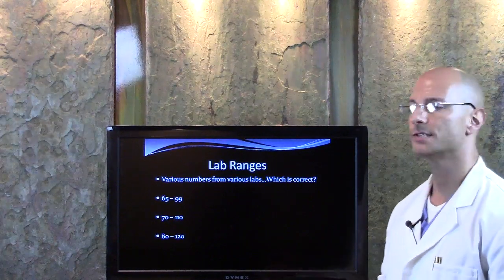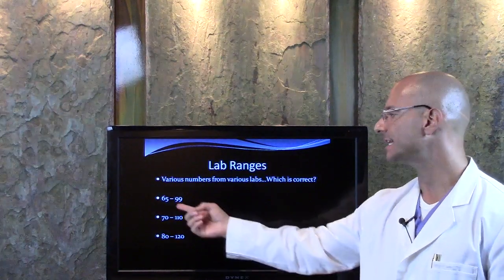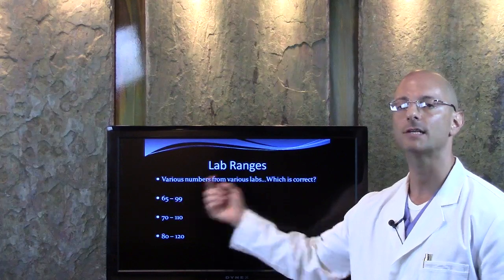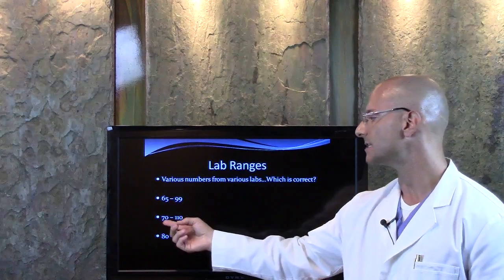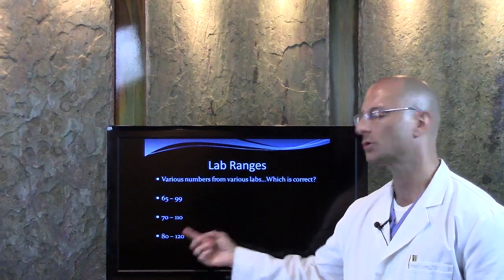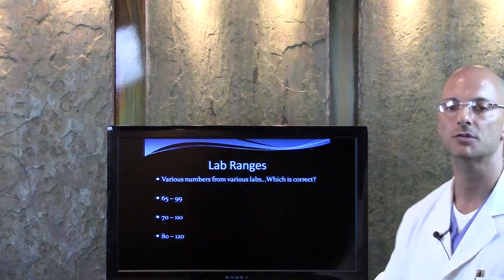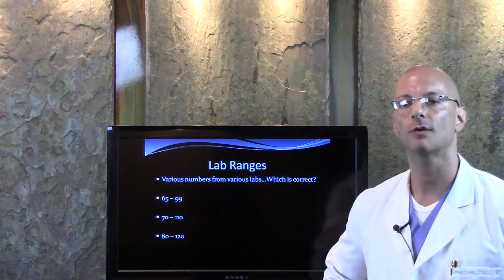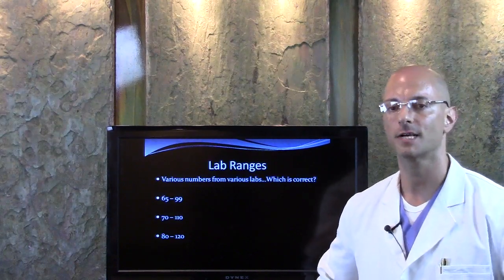When we look at lab ranges, there are labs that say 65 is the low end of normal, 99 is the high end of normal. Another lab says 70 is the low normal, 110 is the high normal. Another lab says 80 is low, 120 is high. Which one is right out of those three? Which range is the correct one? I'll give you five seconds, pick one.